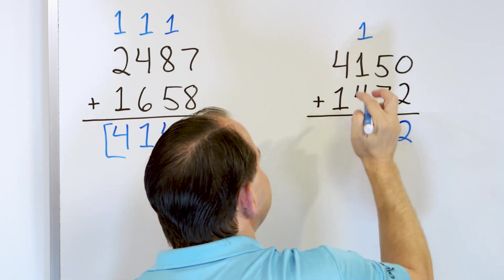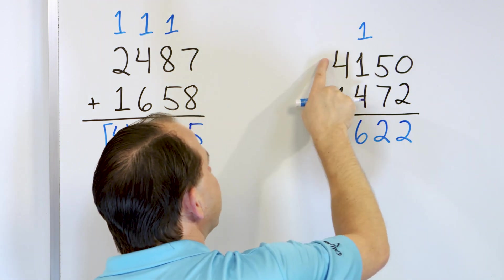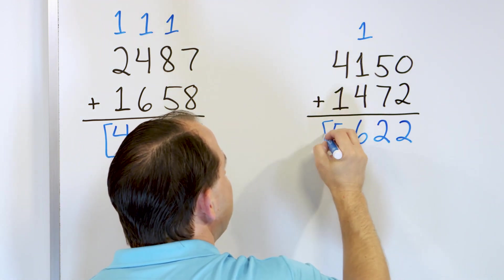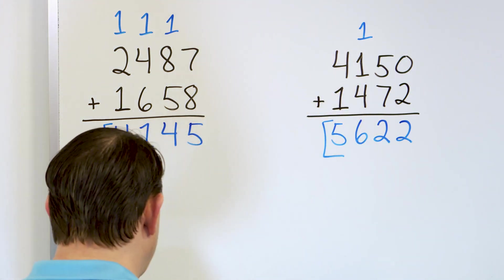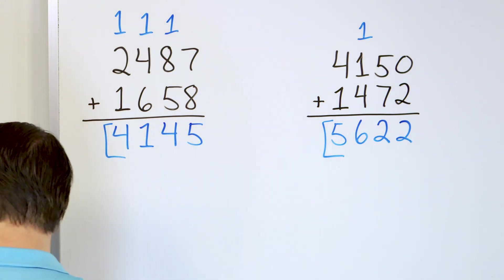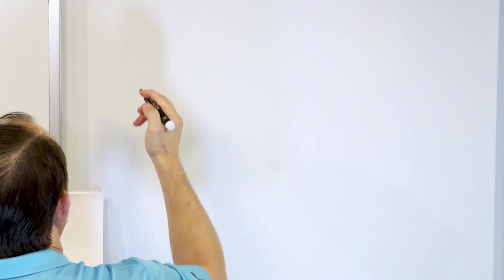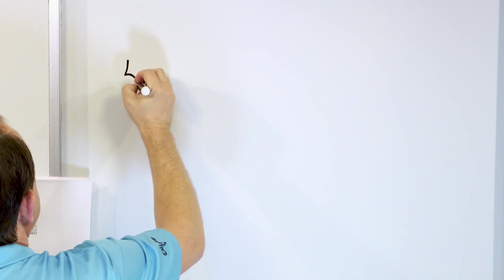Here we have 4, then 5, then 6. So 6 goes in this column. And then 4 plus 1 is 5. And so the answer we get is 5,622. So you see the process once we get in the hang of it, once we get in the groove, it's really not hard. We just have to practice write everything very neatly.